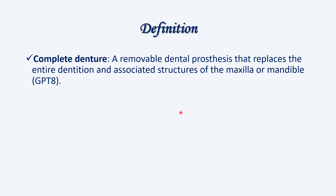Complete denture means it replaces the entire tooth set. It is a removable dental prosthesis that can replace the entire dentition and also some of the structures associated with the maxilla and mandible — like the flange areas. So it even replaces some of the structures of the maxilla and mandible.